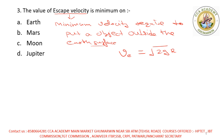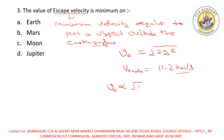Agar baat karu ki escape velocity kitni rahati hai earth ke liye, toh woh rahati hai 11.2 km per second. Escape velocity directly proportional hai √R ke — jis ka radius jyada hoga, us ki escape velocity bhi jyada hogi.